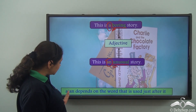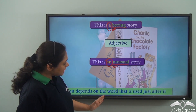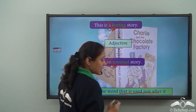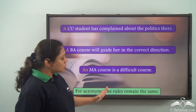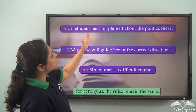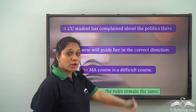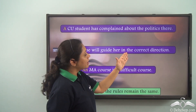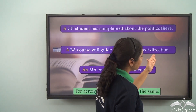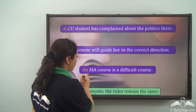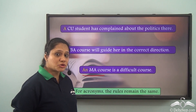So we see that a or an depends on the word that is used just after it. For acronyms, the rules remain the same. So we say: 'A CU student has complained about the politics there.' 'A BA course will guide her in the correct direction.' But 'An MA course is a difficult course.'